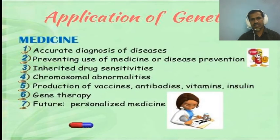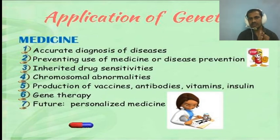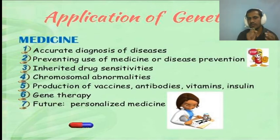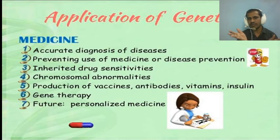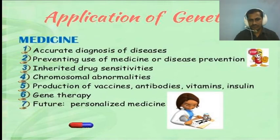Genetics is also applied in medicine for accurate diagnosis of diseases, prevention of inherited drug sensitivities, chromosomal abnormalities, and for the production of vaccines, antibiotics, vitamins, and insulin. It is also involved in gene therapy and allows for the development of personalized medicine.